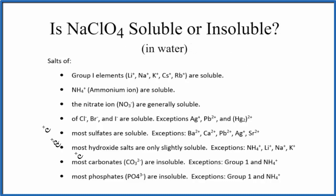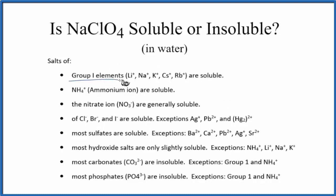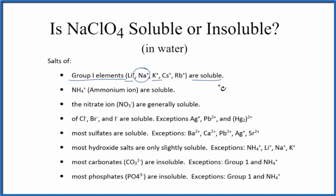So we have these solubility rules — this is a general set, really a good set to remember. And as we look down our rules, elements in group 1, when they form ions, they are soluble. So group 1 on the periodic table, we've got our lithium, sodium, potassium — they're going to be soluble. They'll dissolve in water.